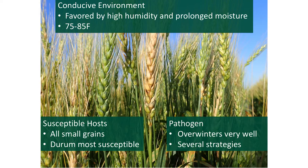The pathogen is a very good survivor in North Dakota and Minnesota. It uses several strategies, and some of its preferred hosts are corn residue as well as small grain residue. The susceptible hosts associated with Fusarium head blight include all small grains, but the level of susceptibility seems to be highest in the durum crop, where most of our resistance is found in hard red spring wheat.